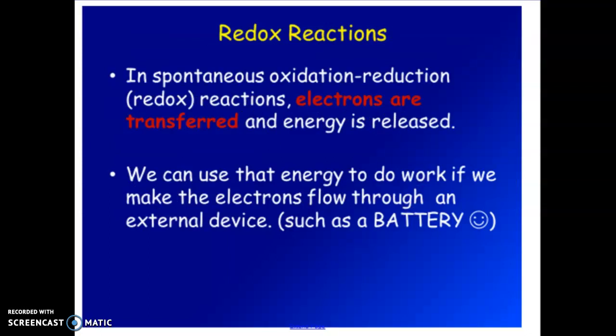So redox is a short form for two processes that are happening: oxidation and reduction. Now, all oxidation-reduction reactions that are spontaneous, meaning ones that will occur, are ones where electrons are transferred. Typically, electrons are transferred from one species to another species, and then this transfer of electrons is where you can have those electrons do work. We will spend some time next week looking at how these batteries can be set up and how we can hook that up to an external device such as a light bulb.